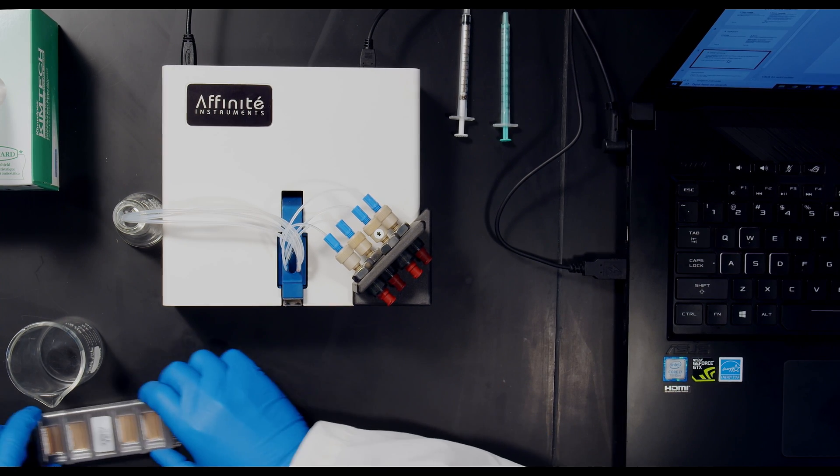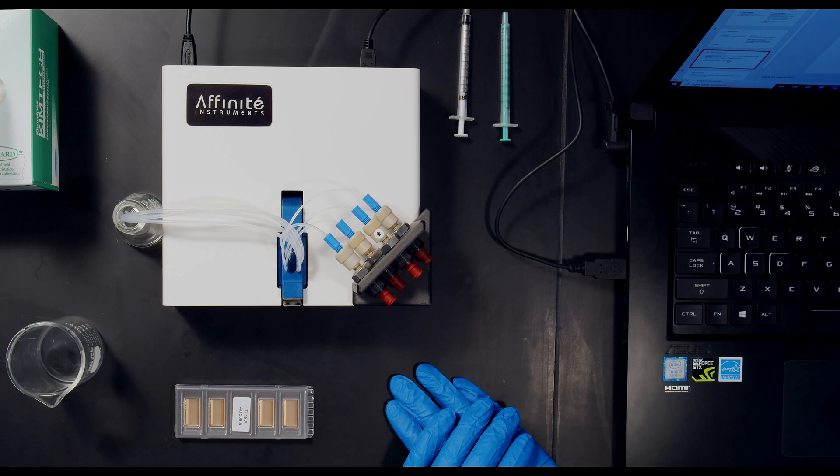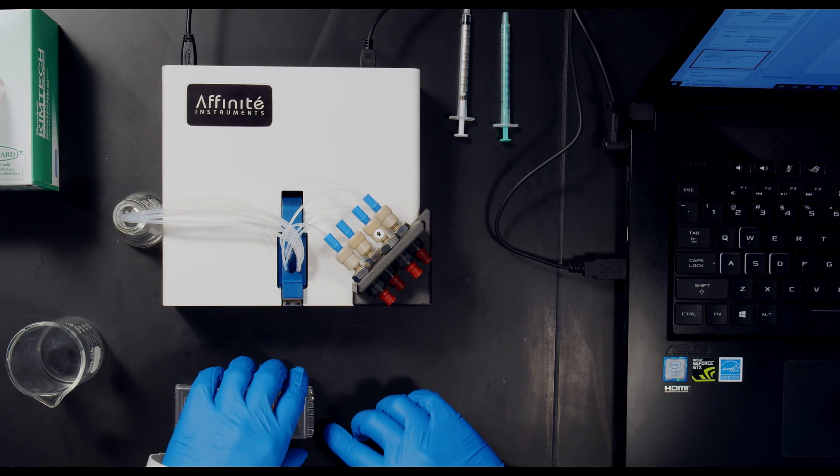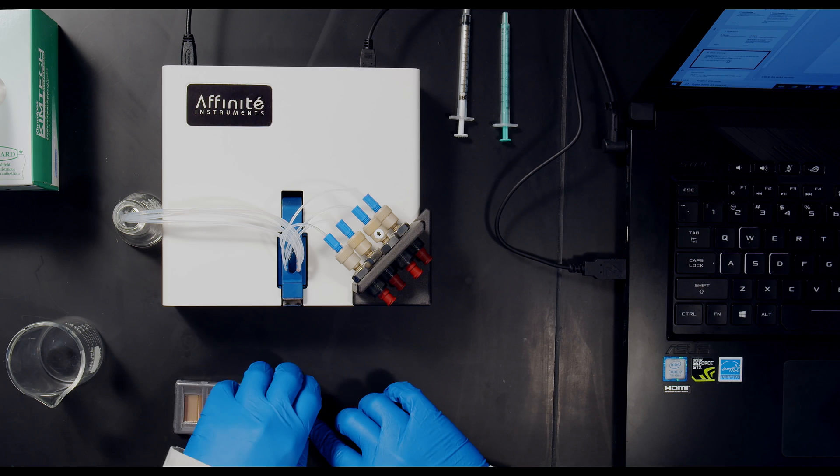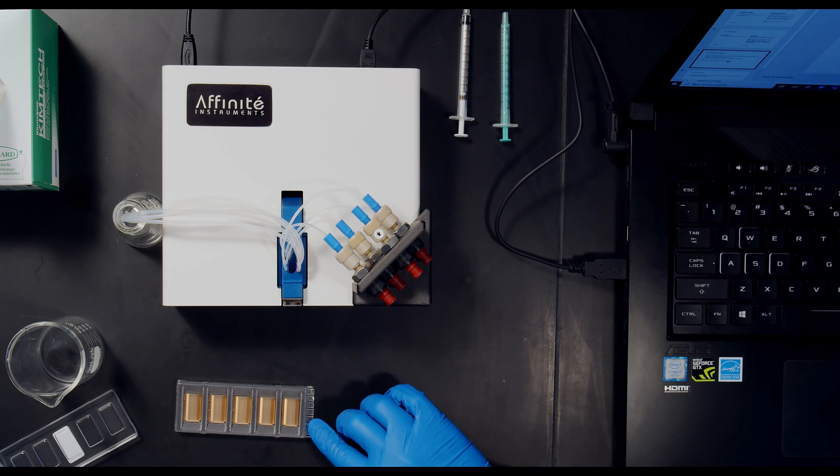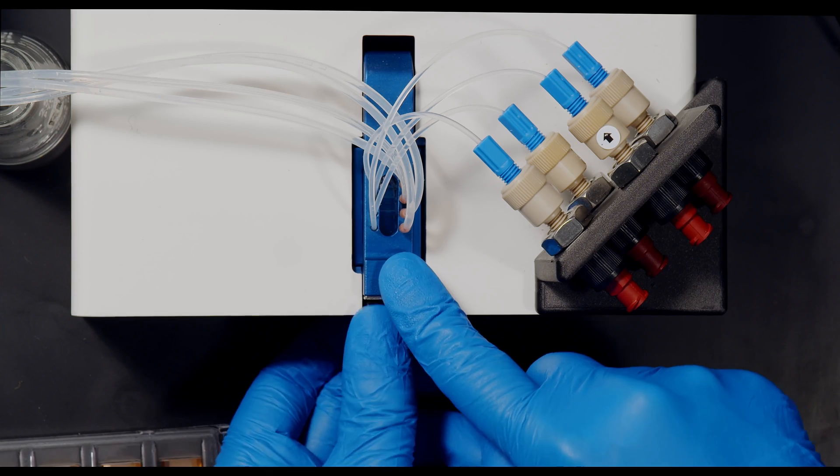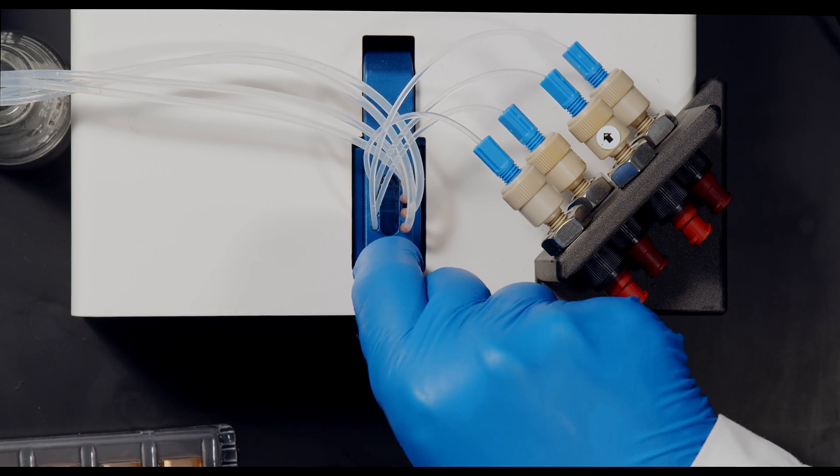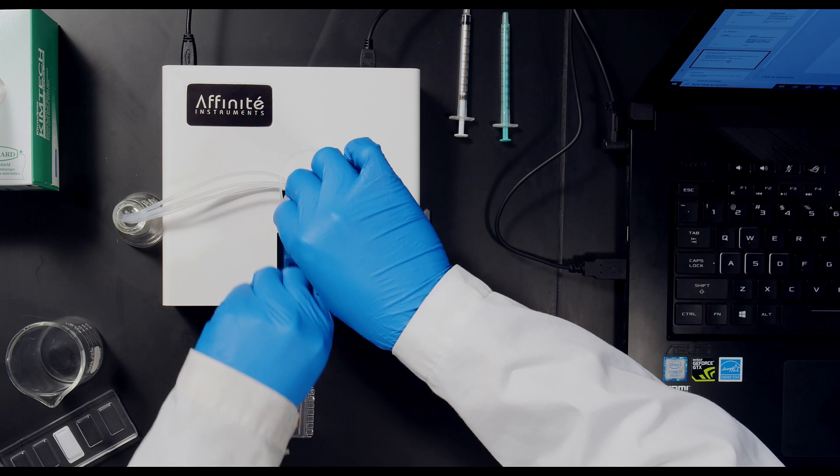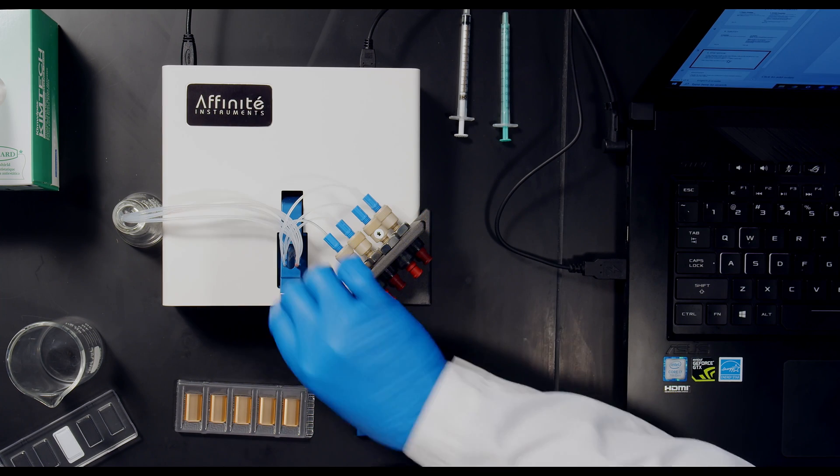Step number one is I'm going to take my package of gold sensor chips, and just by prying open one of the corners, gently lift up the cover of the tray. And then I'm going to remove the chip holder from the instrument by opening the latch, extending the arm upwards, taking out the chip holder, and laying it flat on the bench.